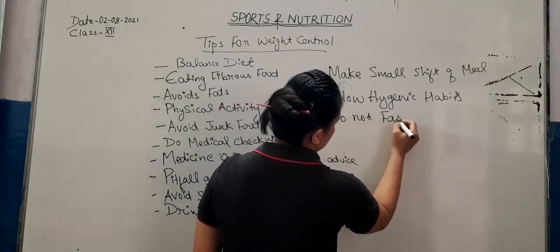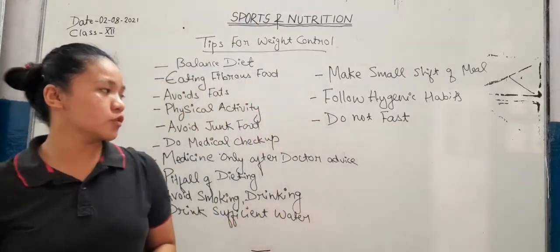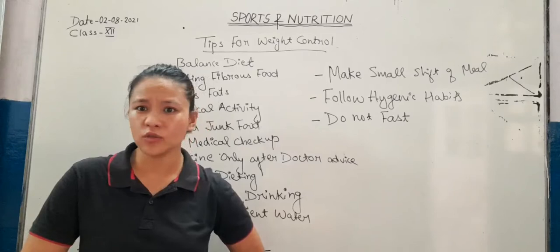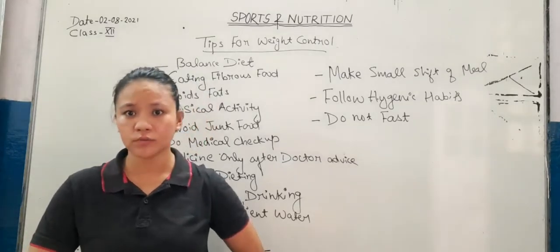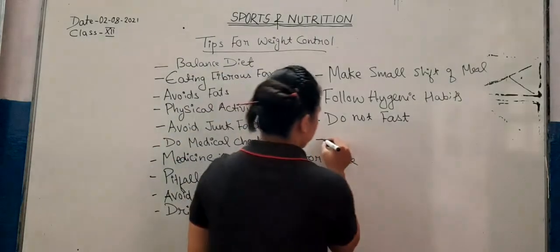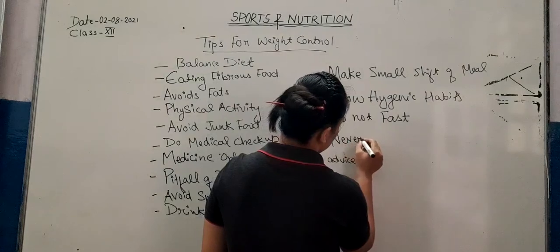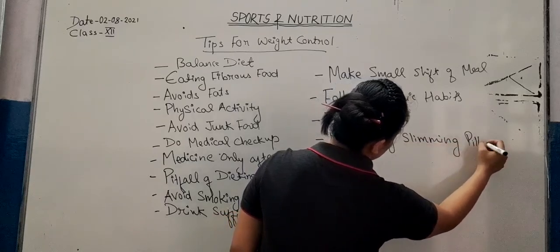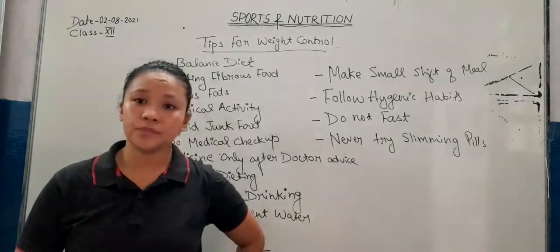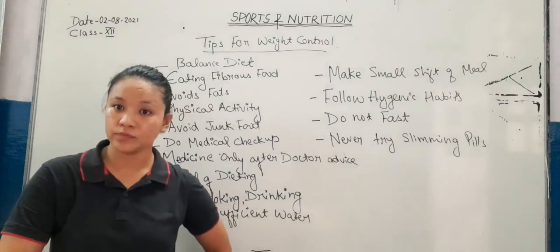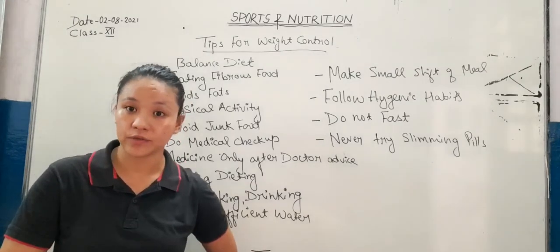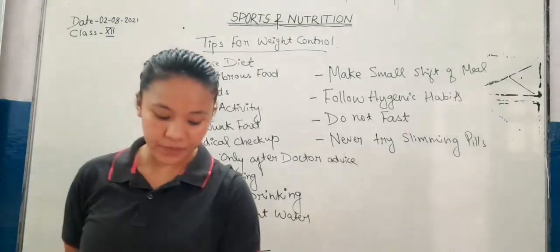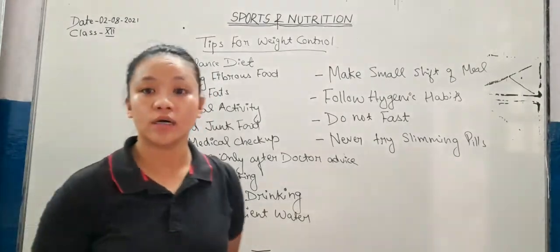Do not fast. People usually, to reduce their weight, start doing fasting, which affects their health. So never do fasting — if you want to reduce weight, do physical workout instead. Also never try slimming pills. People take medicines to reduce weight, which affects their health. Never take any slimming pills, medicines, or drugs for reducing weight.